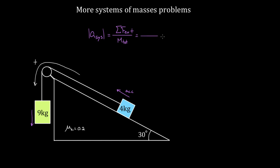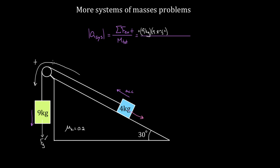What forces make this system go? The force of gravity on the nine kilogram mass is driving this system — that's the force which makes the whole system move. So that's gonna be nine kilograms times 9.8 meters per second squared, and that's positive because it's making this system go. There are no other forces that make the system go, so now we subtract forces that resist the acceleration. The gravity of the four kilogram mass resists acceleration, but not all of it — only this component along the incline, which is mg sine theta.